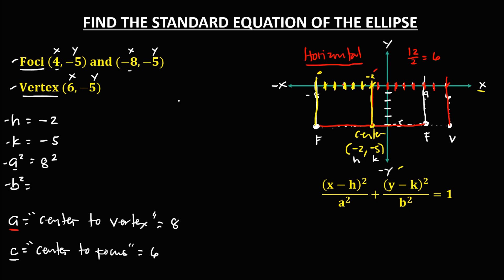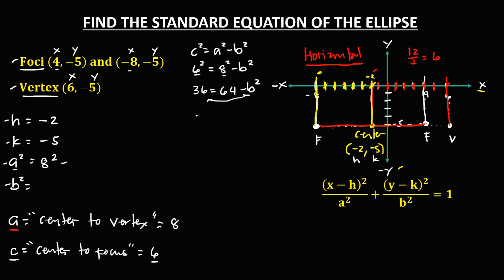To solve for b using c, we use c squared equals a squared minus b squared. Substituting: 6 squared equals 8 squared minus b squared, so 36 equals 64 minus b squared. Transposing, b squared equals 64 minus 36, which gives b squared equals 28.